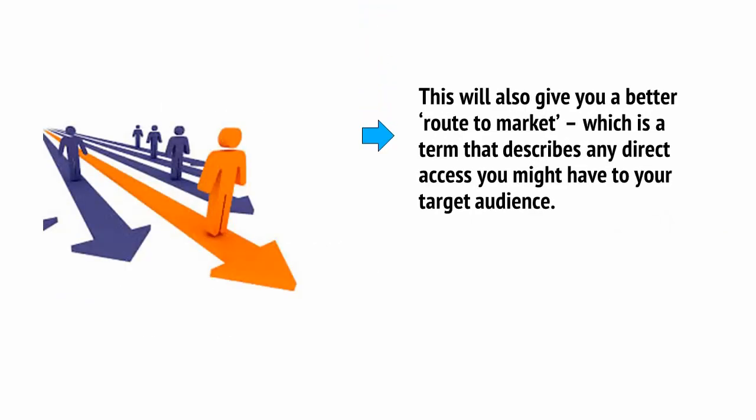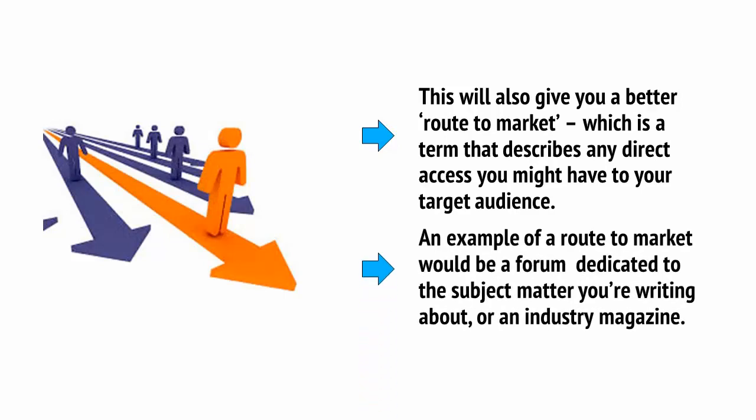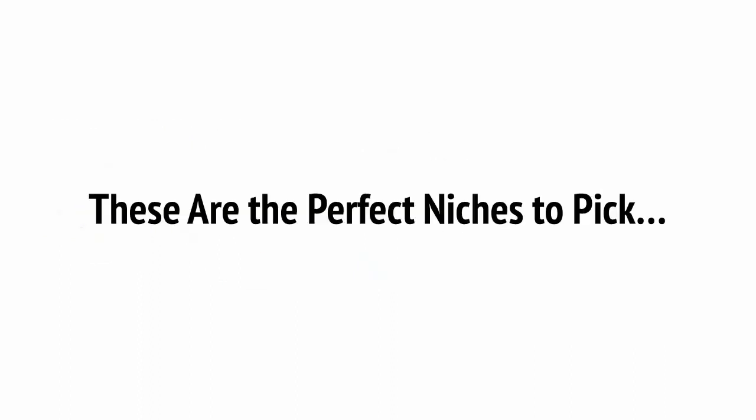This will also give you a better route to market, which is a term that describes any direct access you might have to your target audience. An example of a route to market would be a forum dedicated to the subject matter you're writing about, or an industry magazine. With all this in mind, how do you find the perfect niche for you? Well, there are a few things to consider.